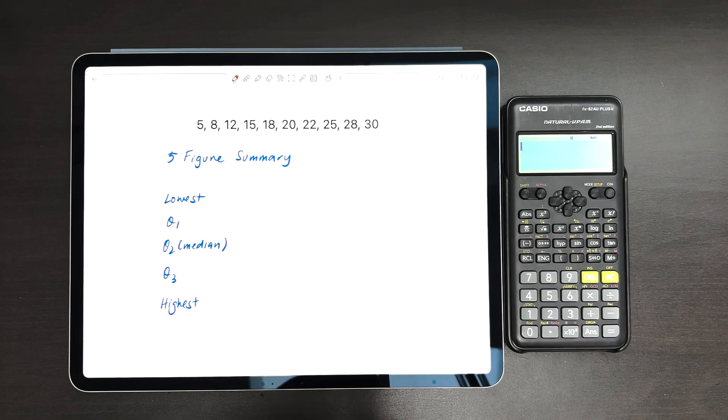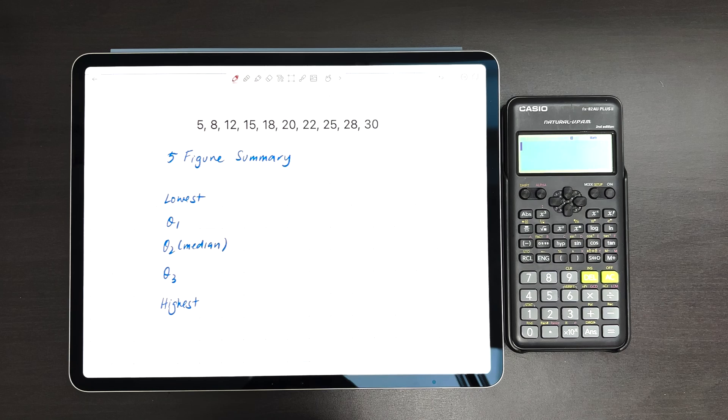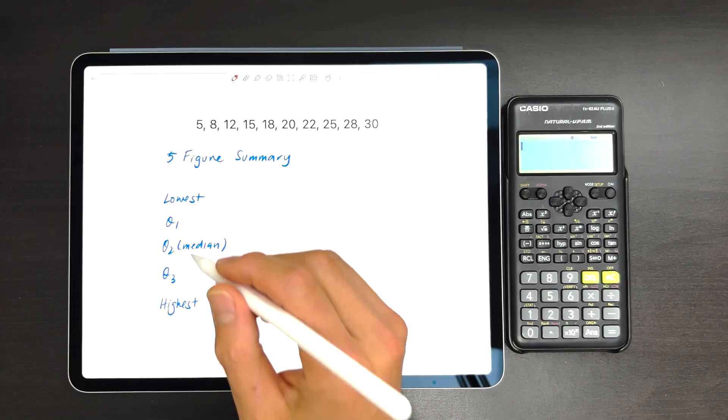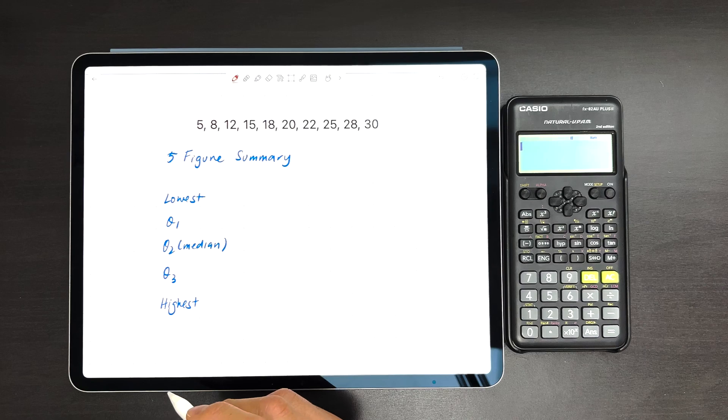In this video, I'm going to show you how to find the five-figure summary using this calculator. If you're not sure what the five-figure summary is, it's the lowest, the highest, first quartile, second quartile or the median, and the third quartile.